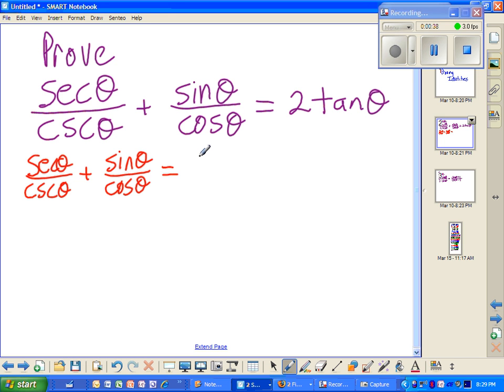So I'm going to write this out. Secant of theta over cosecant of theta plus tangent of theta. And we're looking for two tangents of theta. You always want to look where you're going.